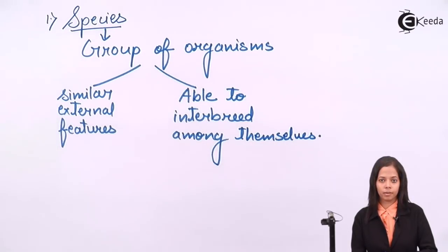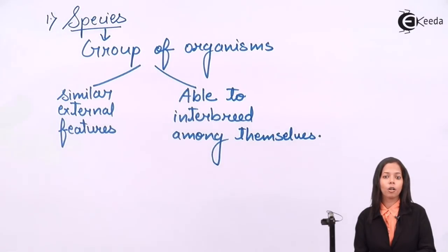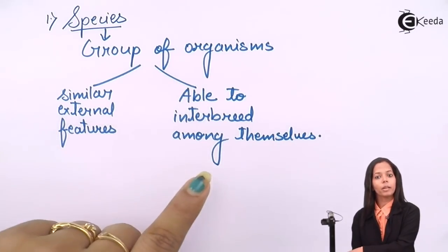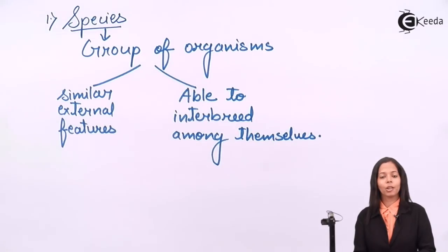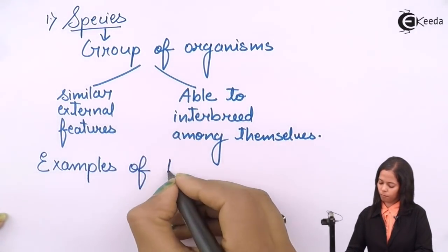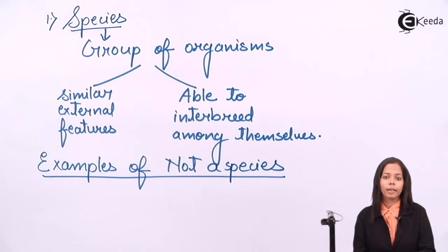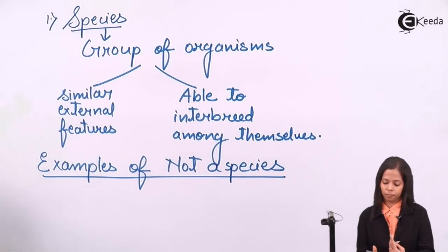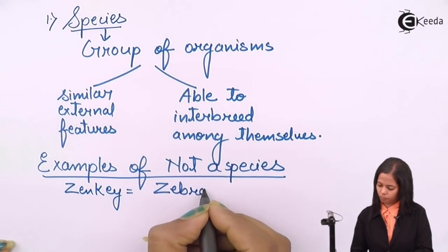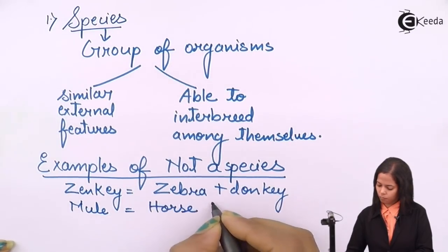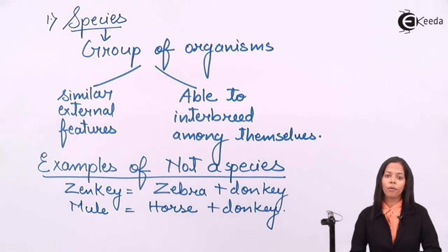There are a few examples of organisms present among us that are not called species. They are not called species because they fail to fulfill one of the two conditions. If they are able to fulfill both conditions, then they are called species. Examples of non-species include Zenki, Mule, Tigon, and in the case of plants, Pomato, etc.